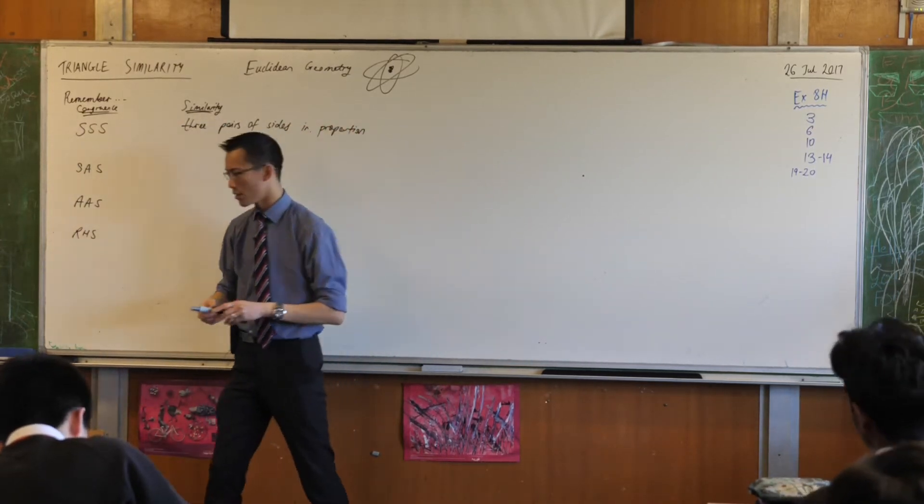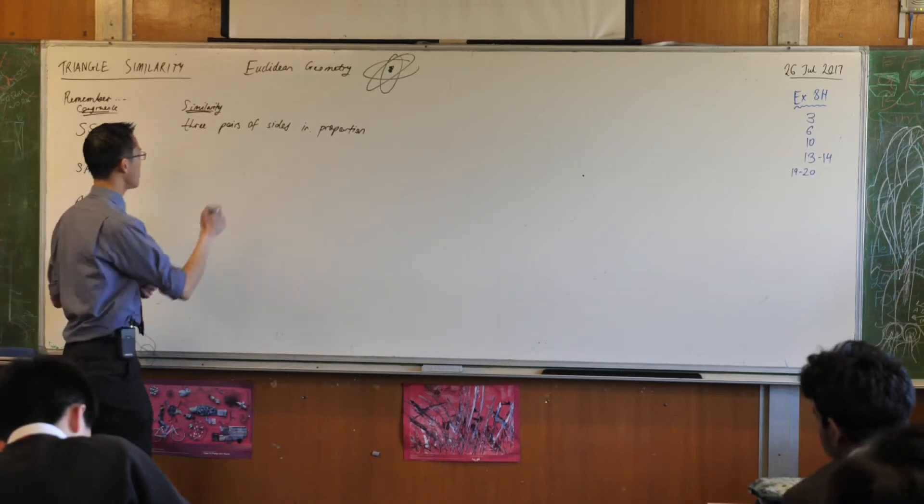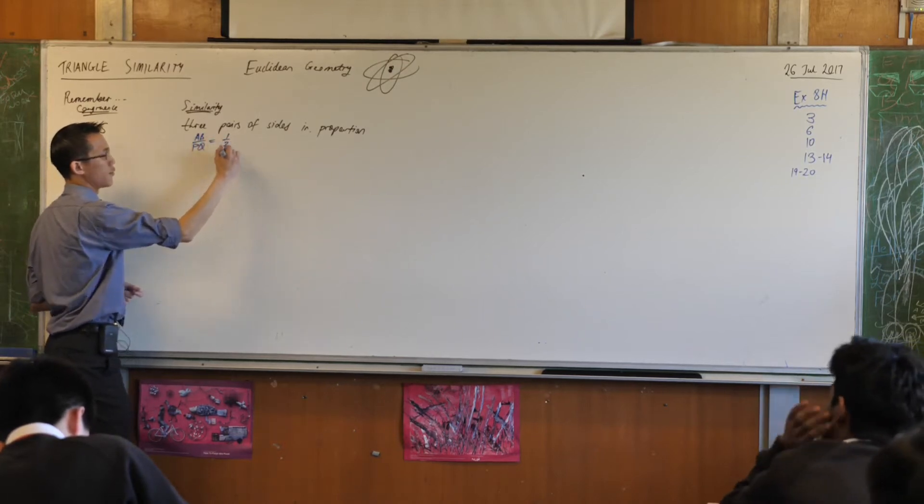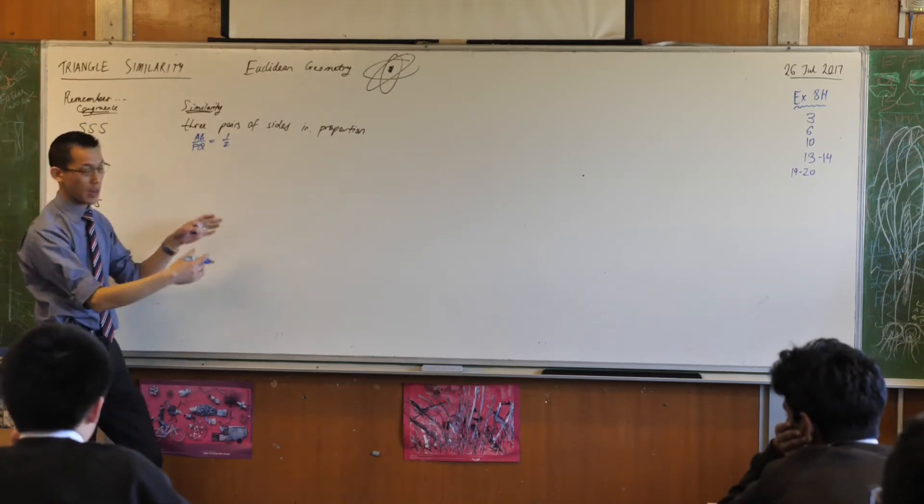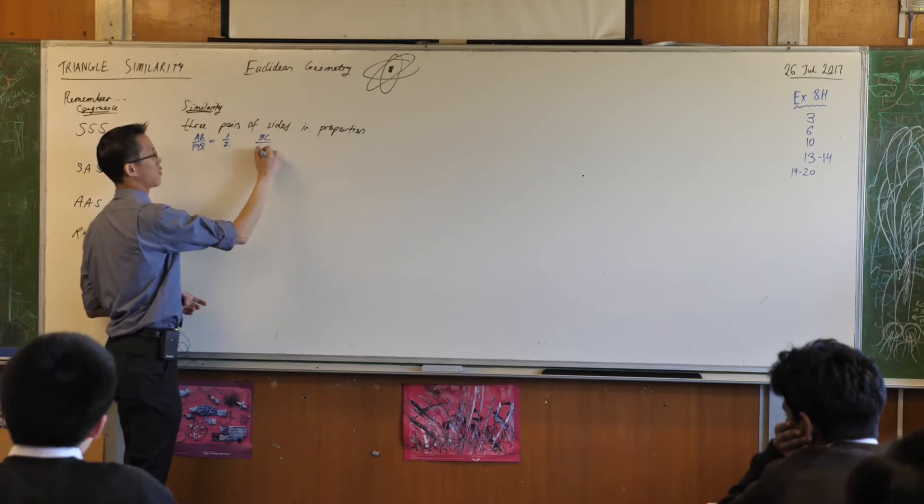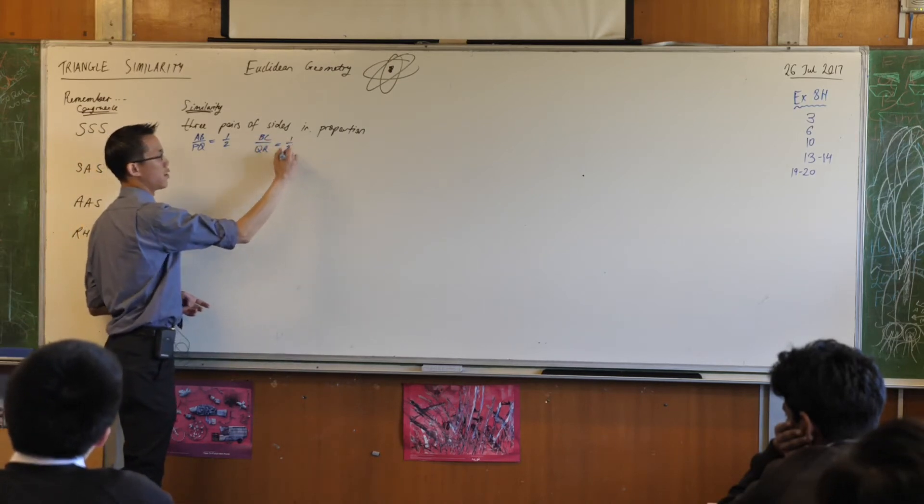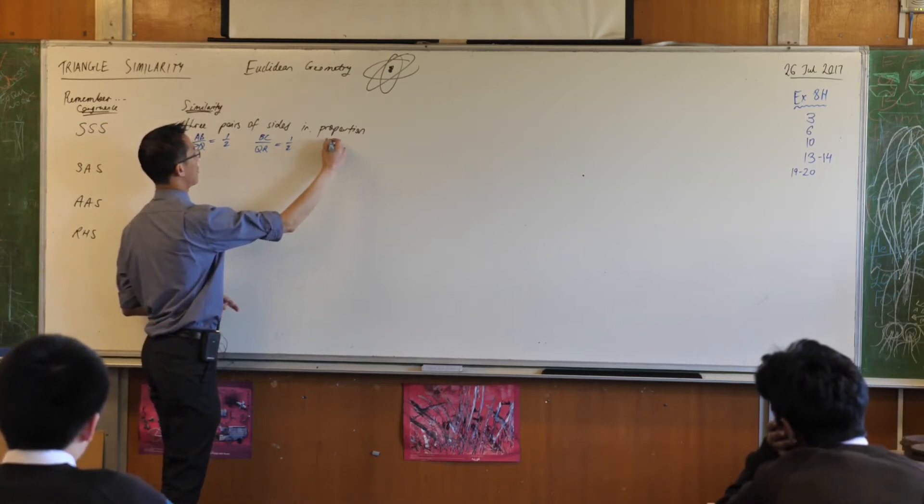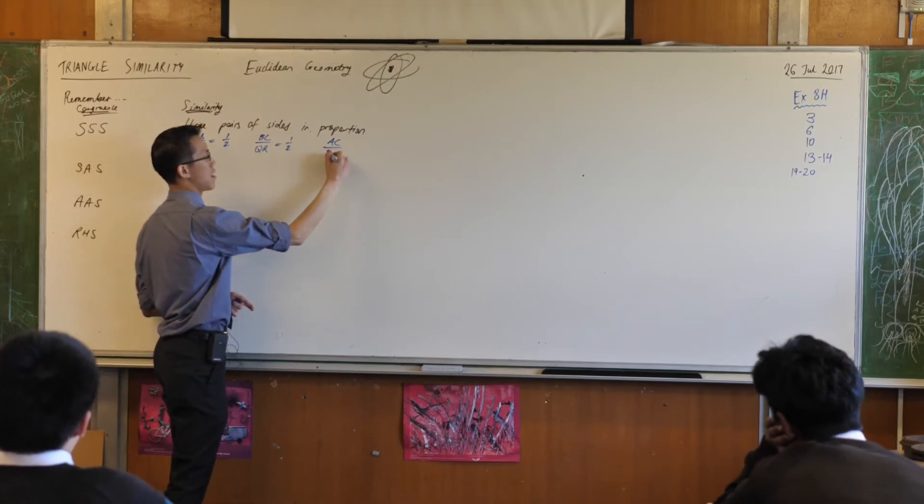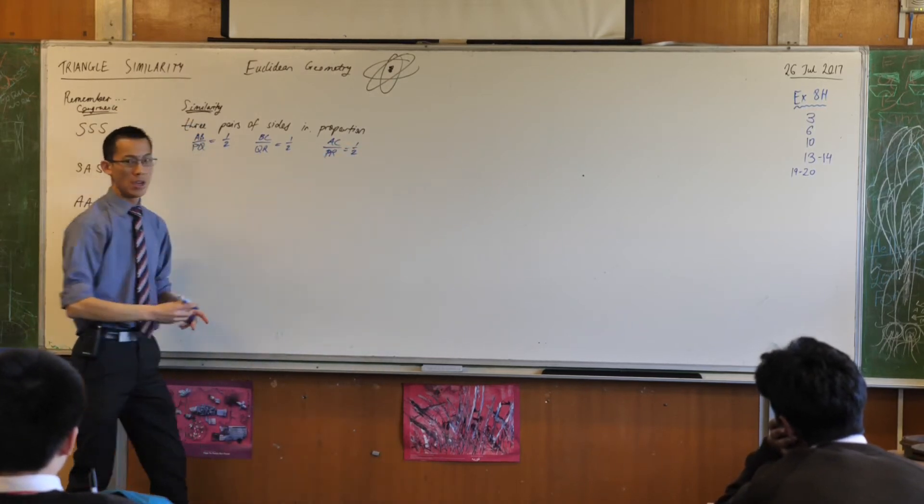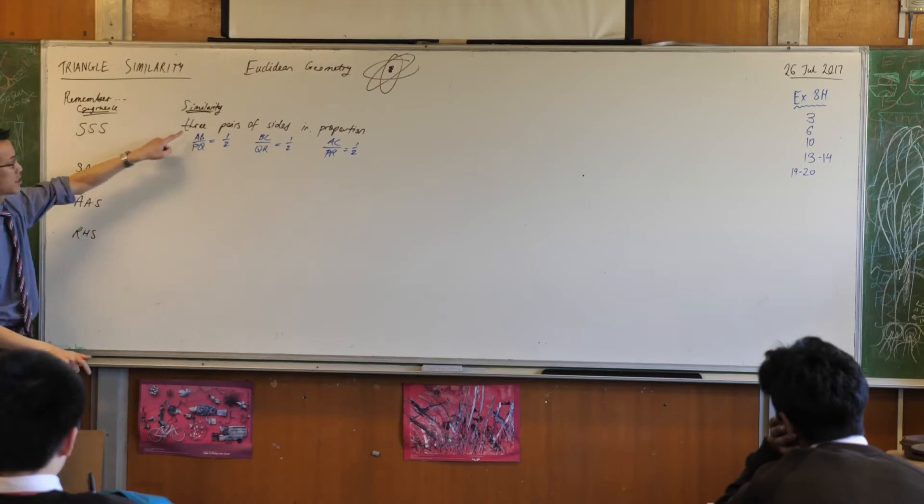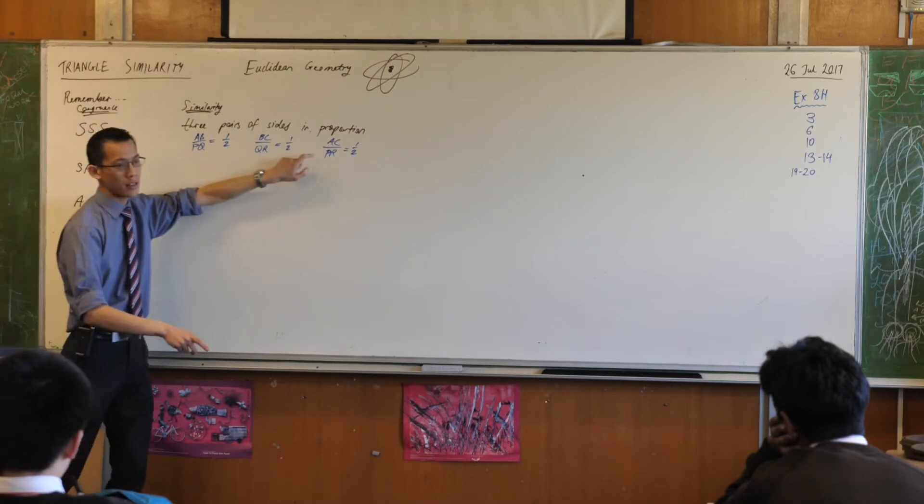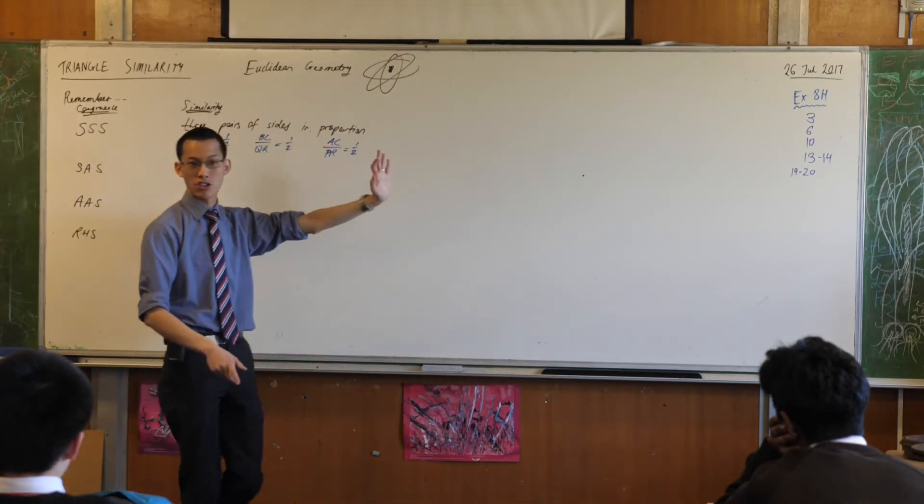So before this, you might have written something like this. AB on PQ equals 1 over 2, if these are two of the sides. And then you might say BC on QR equals 1 over 2, or 2 over 4 or whatever it happens to be. And then lastly you might say AC on PR equals 1 over 2. So you have established that the sides in one triangle correspond to the sides in the other triangle and produce exactly the same ratios all the way through.